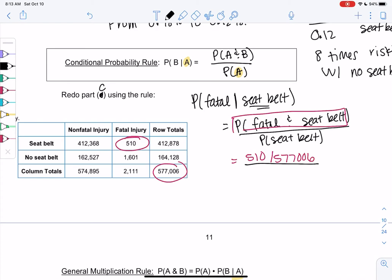The probability of a seatbelt goes on the bottom, which is just everyone with a seatbelt, 412,878 out of everyone, 577,006. Then algebra tells us we can cancel out the 577,006 because they have that in common. And we get 510 out of 412,878.